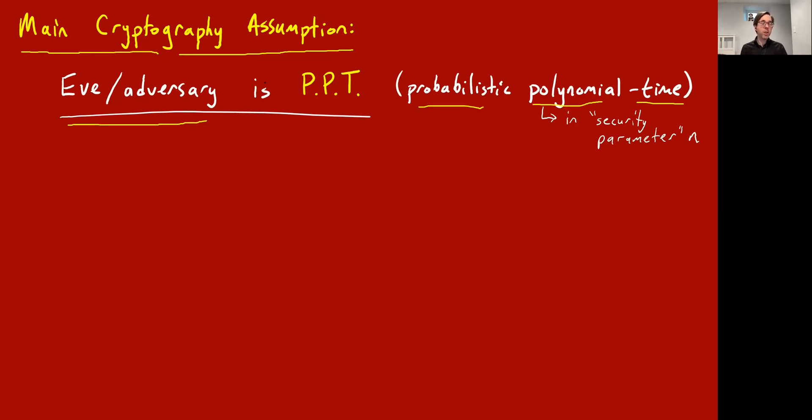So the main assumption is that even though the adversary is working against you, you still model them as though they're a polynomial time algorithm. In fact, you model all the participants as algorithms, but particularly you model the adversaries as being polynomial time, and this is some kind of limitation on what they can do.